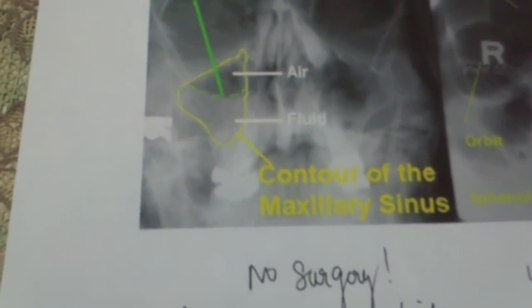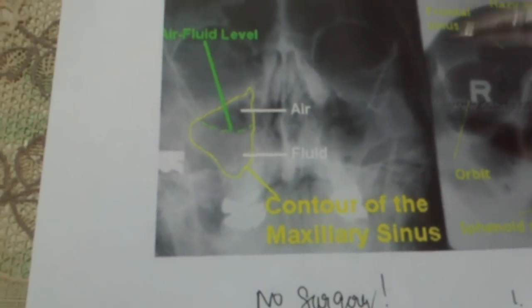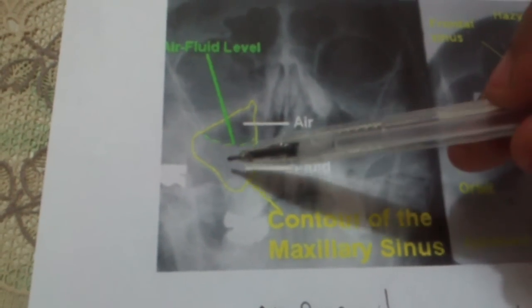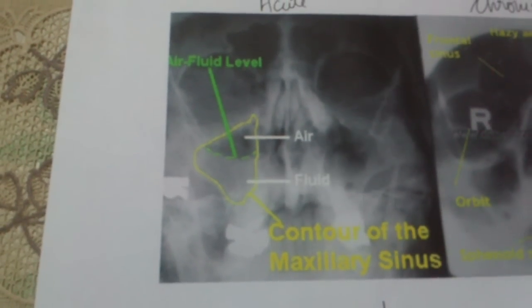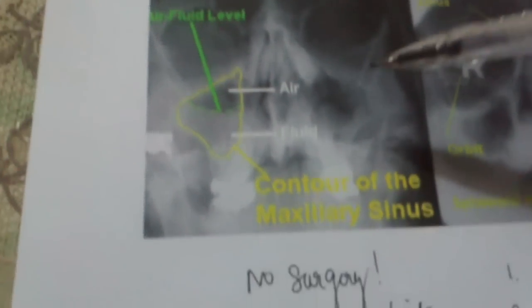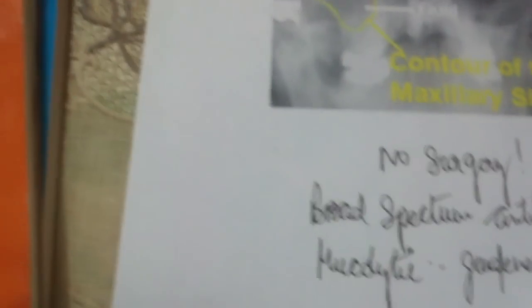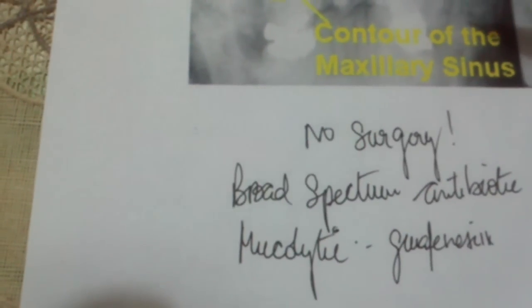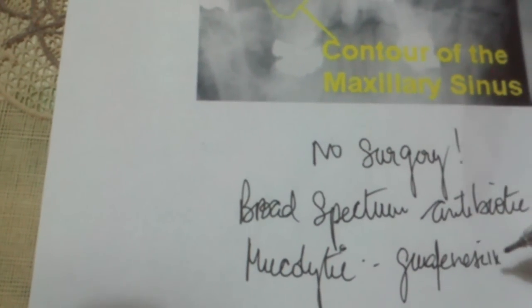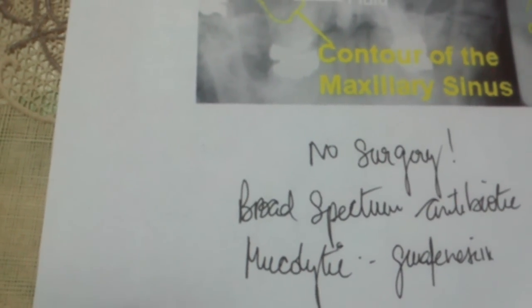One thing should be very clear: in an acute sinus disease, no surgery is permitted, because if you attempt to make an opening through the diploic bone, infection can spread to the bone resulting in osteomyelitis. Therefore, the treatment is a broad-spectrum antibiotic with a mucolytic, primarily guaifenesin.